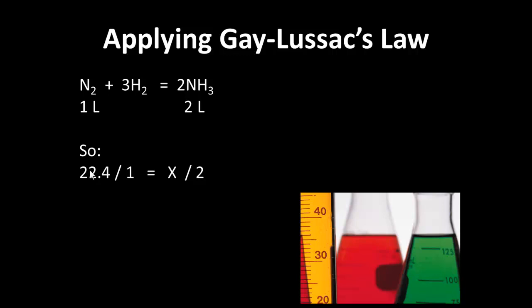One volume of nitrogen gives 2 volumes of ammonia. So 22.4 over 1 equals x over 2. Solving for x, we get 44.8 liters.